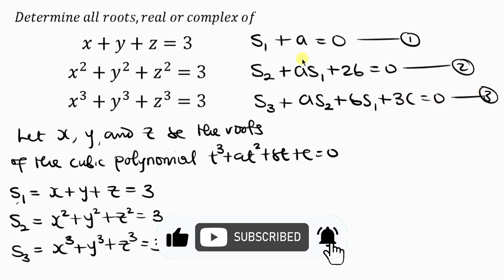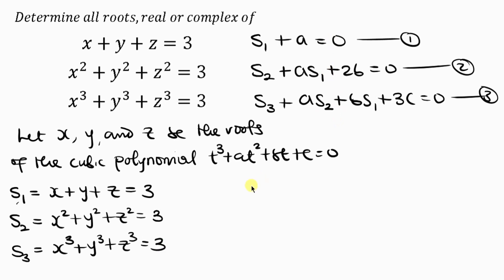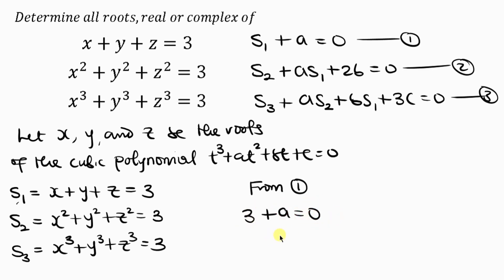Our next step is to generate three equations. The first is S1 plus a equal to 0. The second is S2 plus a·S1 plus 2b equal to 0. And the third is S3 plus a·S2 plus b·S1 plus 3c equal to 0.